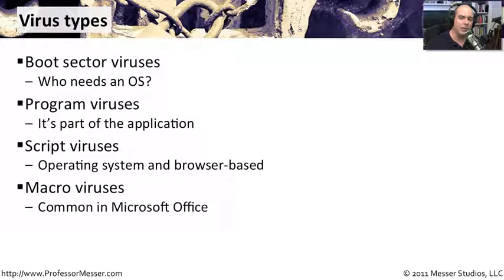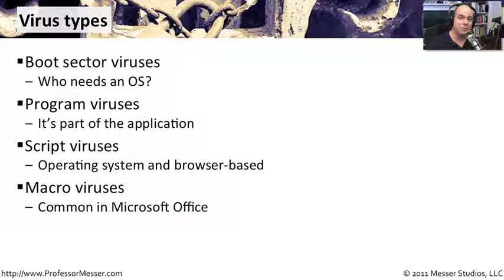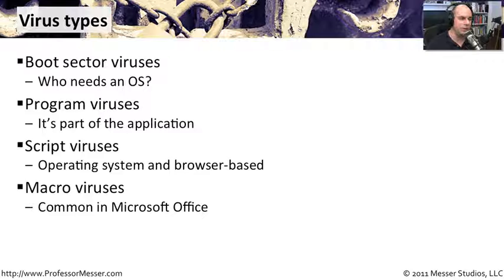Another very common type of virus is a macro virus, enabled by functionality we added to our applications. When Microsoft Office first started allowing macros — Word, Excel, all of the Microsoft Office applications — the bad guys began finding ways those macros could take advantage of things outside of Office. You could open a Word document or spreadsheet, and the macro inside would gain access to the operating system. Microsoft corrects these vulnerabilities with updates, but bad guys like to use this because so many people use Microsoft Office applications, giving them more opportunities to take advantage of that.